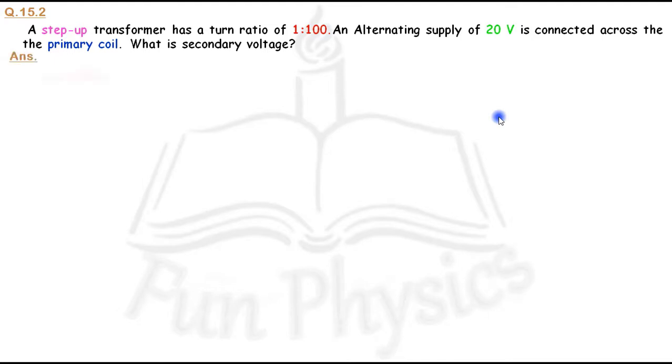Let me write the given data. For the step-up transformer, the turn ratio is given: Np:Ns equals 1:100, which we can write as Np over Ns equals 1 over 100.